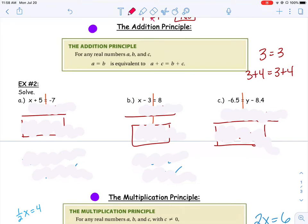The first one is called the addition principle. What it says is that if I have two things equal, a equals b, then if I add the same quantity to both sides, then the sides should still be equal. The equation should still be true.